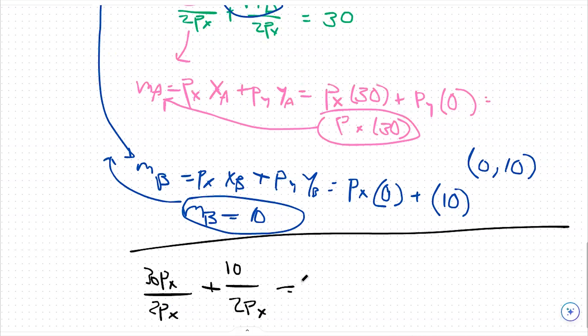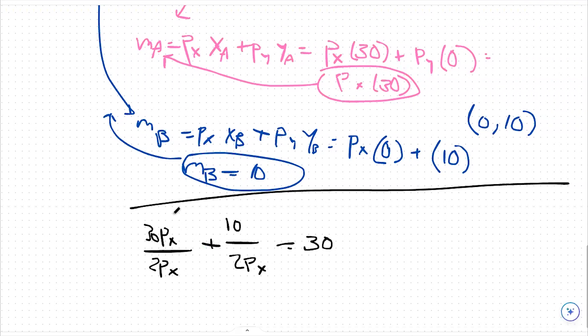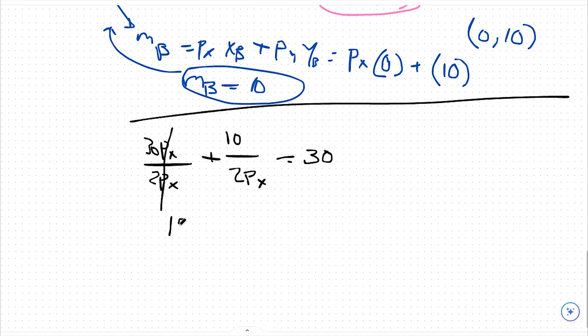So right away, I can subtract out these px's because they're being divided by each other. And then we divide by 2 on this 30. So we're left with 15 plus 5 over px equals 30. All I did there was just divide 10 by 2.